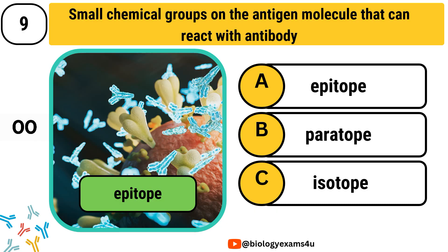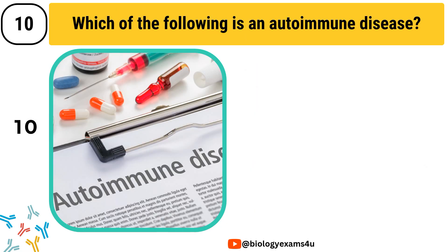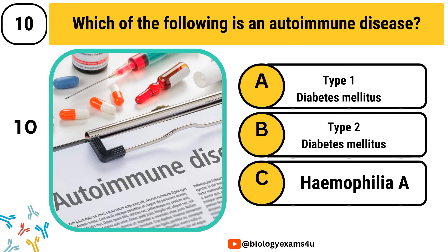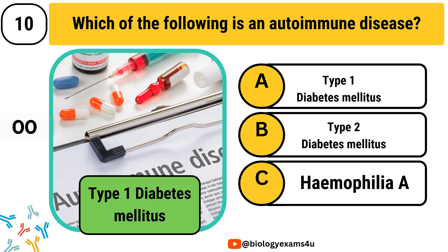Question number 10. Which of the following is an autoimmune disease? Option A, type 1 diabetes mellitus. Option B, type 2 diabetes mellitus. Option C, haemophilia A. The correct answer is type 1 diabetes mellitus.